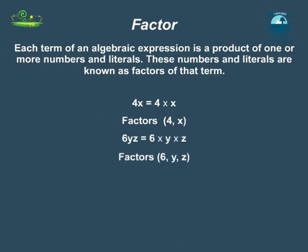The term 6yz is a product of factors 6, z and y. The numerical factor of a term is called its coefficient. The coefficient in the term 6yz is 6 and the coefficient in the term minus 5x is minus 5.